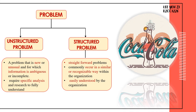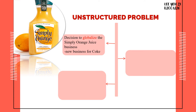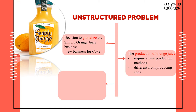An unstructured problem may require specific analysis and research to fully understand. A structured problem, on the other hand, is straightforward, commonly occurs in a similar or recognizable way within the organization, and is easily understood. The first unstructured problem for Coke is the decision to globalize the Simply Orange business, as it is a new business for Coke in order to beat rival PepsiCo. Coke is not sure whether people from worldwide will accept this kind of product or not. Besides, the production of orange juice is also considered an unstructured problem because it is totally different from producing soda. It requires Coke to use new production methods such as harvesting, salting the oranges, squeezing oranges to collect fresh juice and natural oils, which are not used in producing soda drinks.